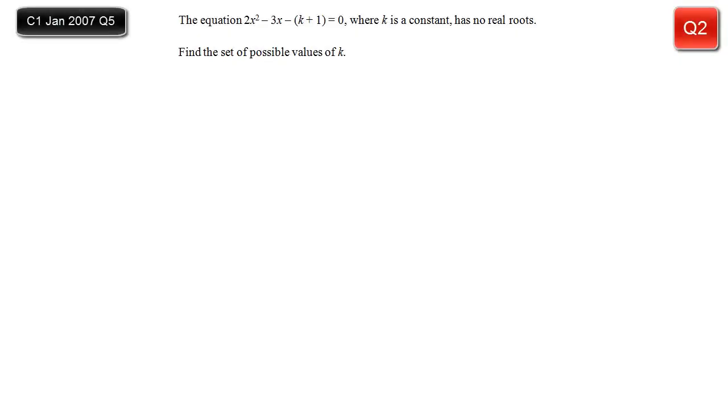In this question we have an equation, 2x² - 3x - k + 1 = 0. k is some constant, and we're given the fact that it has no real roots. So if we're to find the set of values of k, we'll use this fact. If it's got no real roots, then the bit that you would have to square root in the formula to get the solutions can't be square rooted, it's negative. So b² - 4ac is less than 0.